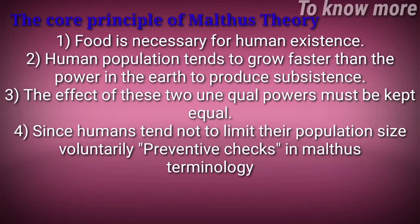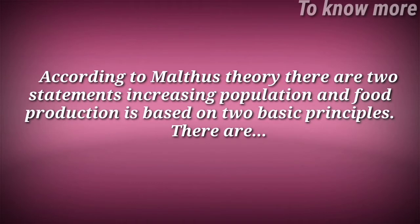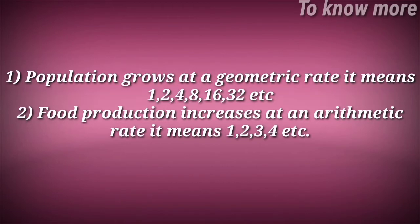Since humans tend not to limit their population size voluntarily, according to Malthus's theory, increasing population and food production are based on two basic principles: number one, population grows at a geometric rate — meaning 1, 2, 4, 8, 16, 32, and so on.